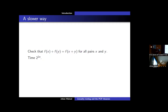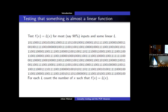Another way — which for the moment is very bad — is instead of going through all inputs and checking outputs, we check the mathematical definition directly: f(x) + f(y) = f(x+y) for all possible x and y. This takes time 2^{2n} because we have 2^n choices for x and 2^n for y. Suppose the function is just almost linear — say it agrees with a linear function on 90% of inputs.